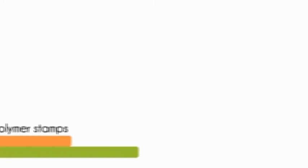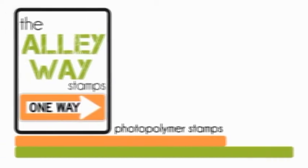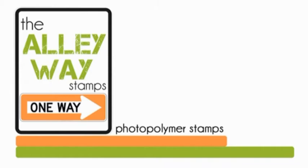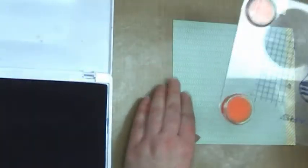Hi, this is Danielle Dawes with a tutorial for The Alley Way Stamps. I'm making a really simple card today using paper piecing and the set Kid and Caboodle.